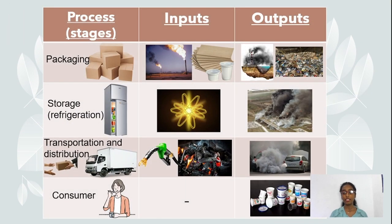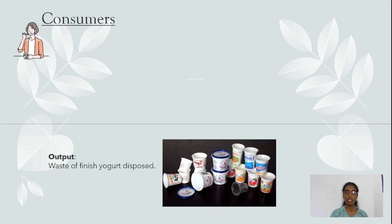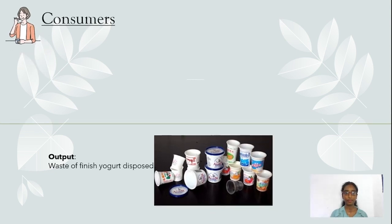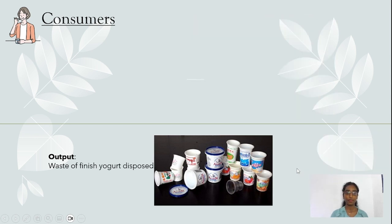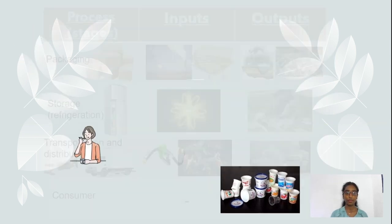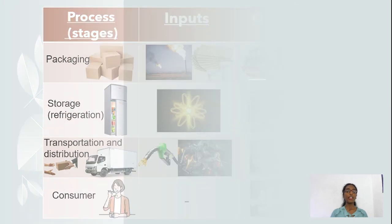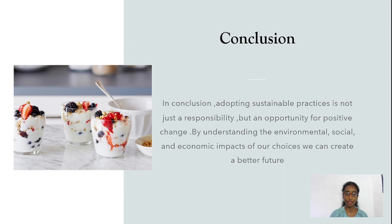At the consumption stage, yogurt is obtained by consumers. After eating, the finished yogurt cups and spoons are disposed into the environment as the output of the end-of-life stage. This concludes the life cycle of yogurt production.